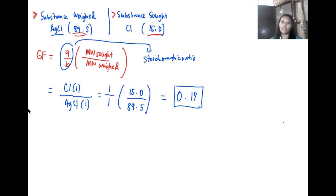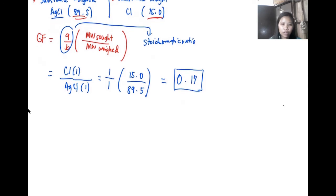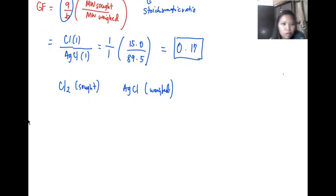Now if you will ask what if the top and bottom are not equal? Let's have this problem, for example: Cl2 over AgCl. Cl2 is the substance that is being sought and we have AgCl as the substance weight. What are we going to do since they're not equal? Same process - we just set our gravimetric factor formula which is Cl2 all over AgCl. Now at the top we have two Cl, at the bottom we have one.